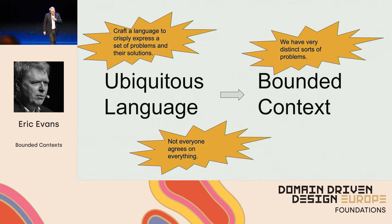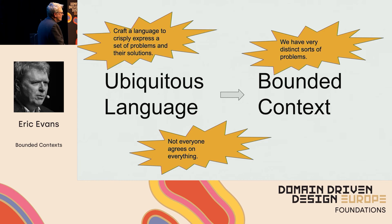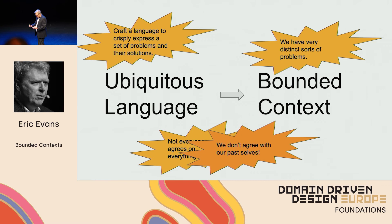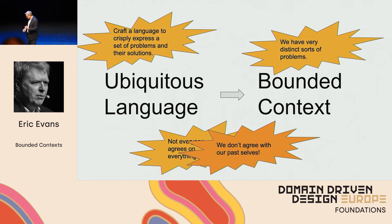Ubiquitous language implies bounded context not just because different problems call for different solutions, but also because not everyone agrees on everything. If we have one unified view of the world, we can barely move forward unless everyone agrees — that's a three-legged race. The bounded context allows us to say not everyone has to agree on everything. You have your model, your whole design is within that boundary, and as long as we can agree on the interface between — just that one thing — that's all we really have to agree on.